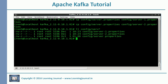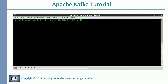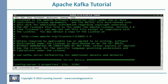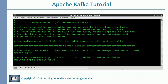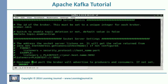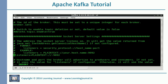Now I have two more property files. I want to change three properties in these files. The first property is broker id — it is a unique identifier for the broker. The default value for the first broker is zero, so we will change it to one for the second broker and two for the third broker. The next property is the broker port — it is a network port number to which the broker will bind itself. The broker will use this port number to communicate with producers and consumers.